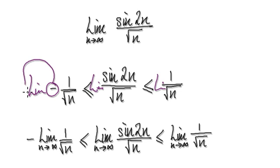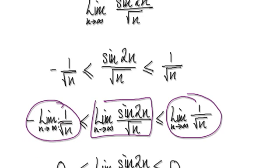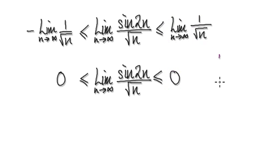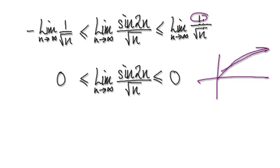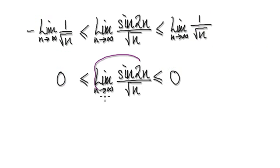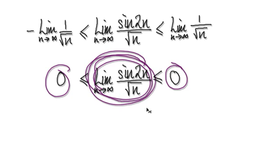The negative 1 is a constant, so you can take it out. We know the thing we're investigating is always tracked in between these two bounds. The limit of 1 over √n is 0, because √n keeps getting bigger and bigger, so 1 over √n approaches 0. Both bounds have limit 0, so this thing has no choice but to have a limit of 0.